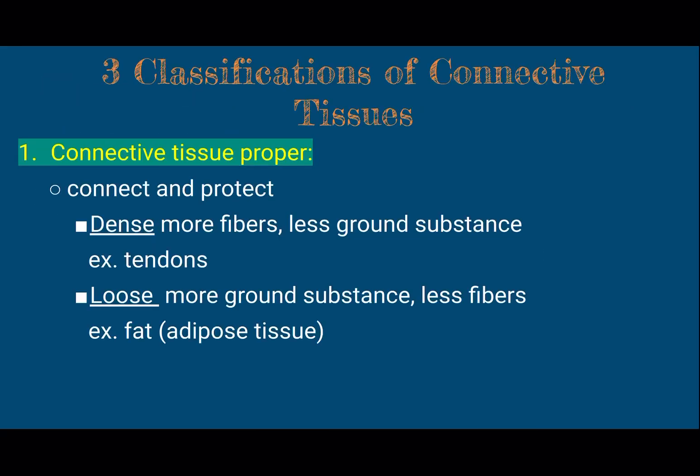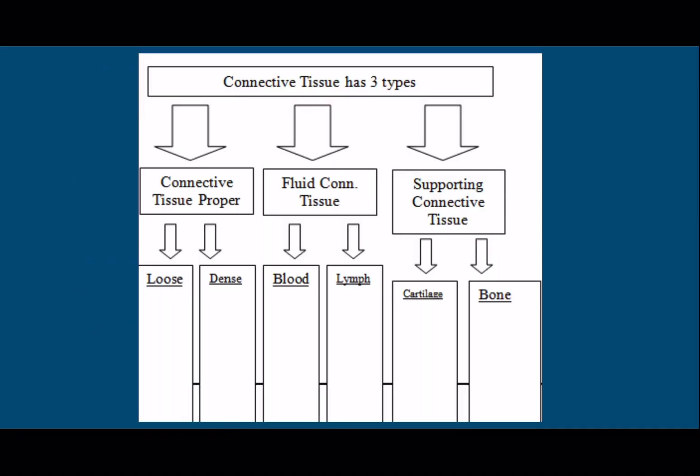The first category, connective tissue proper — sometimes we call it CTP for short — has dense and loose. Back to those three components: dense has more fibers and less ground substance. Loose has more ground substance and less fibers. So that form of it follows what it does and what it needs to have for its job.